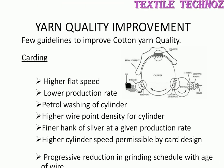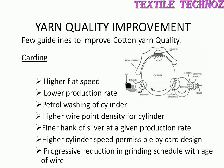In carding, higher flat speed will improve yarn quality, along with lower production rate, petrol wash of cylinders, higher wire point density for cylinders, making the hank finer at the given production rate, higher cylinder speed if the card design permits, and progressive reduction in grinding residue with age of wire will improve the yarn quality.